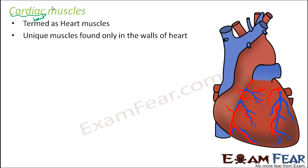The third type of muscle is cardiac muscles. The word cardiac itself means something related to the heart, so these are also termed as heart muscles. They are unique muscles found only in the walls of the heart. Initially people thought there were only two types of muscles — voluntary and involuntary — but later they found that the muscles on the walls of the heart were very unique: neither skeletal muscles nor smooth muscles. So since they had peculiar characteristics, they were grouped under a separate type called cardiac muscles.